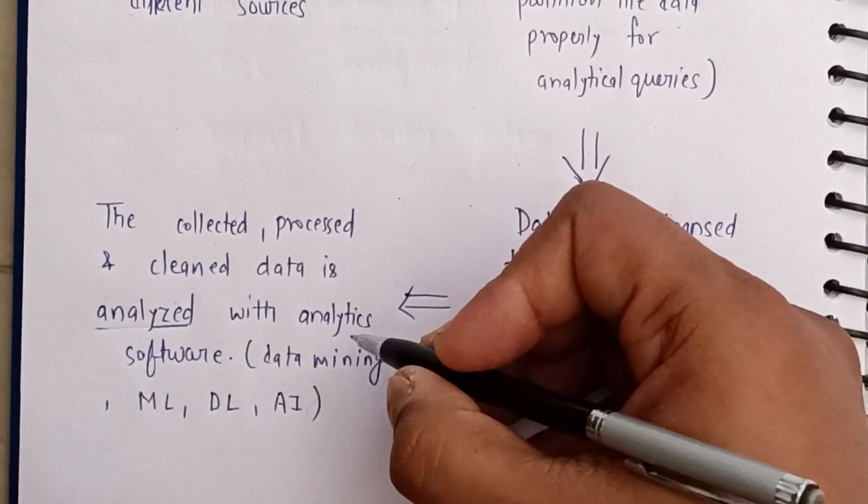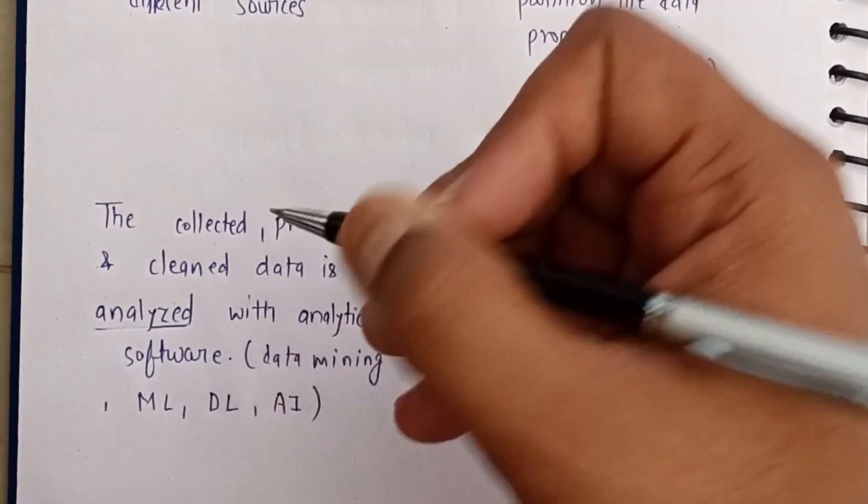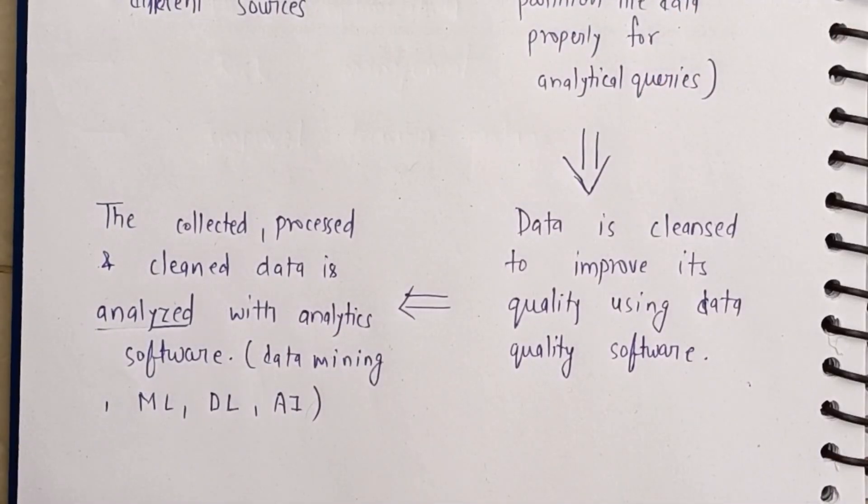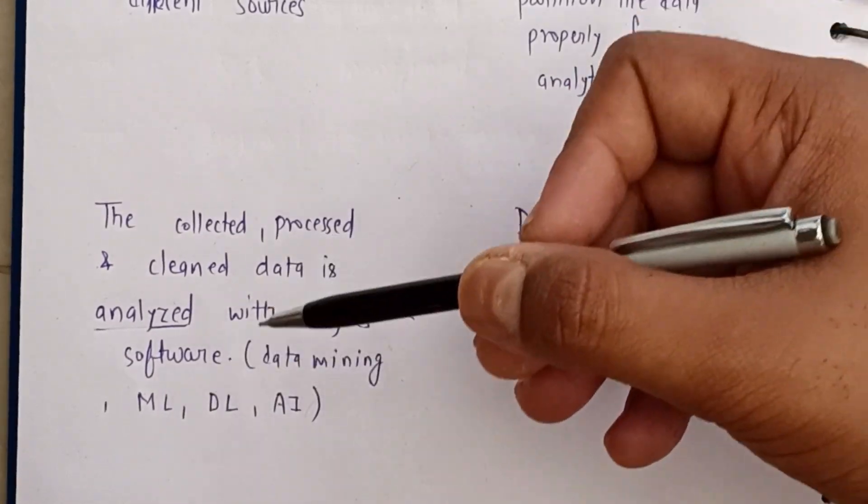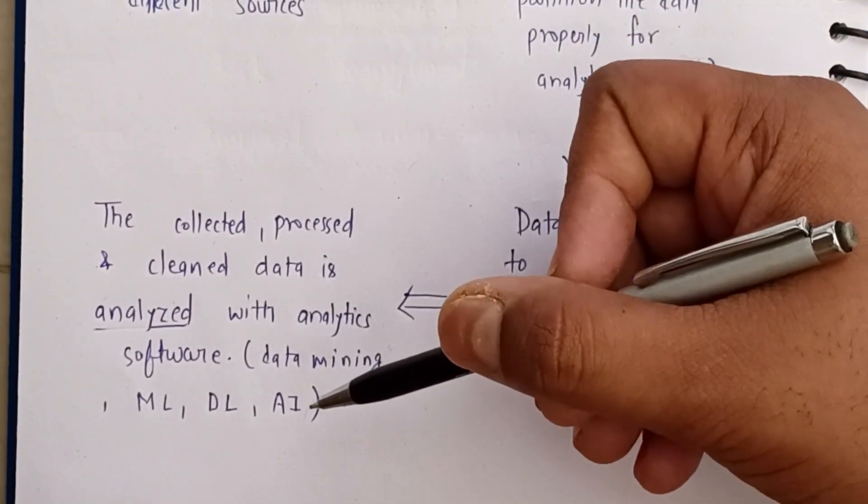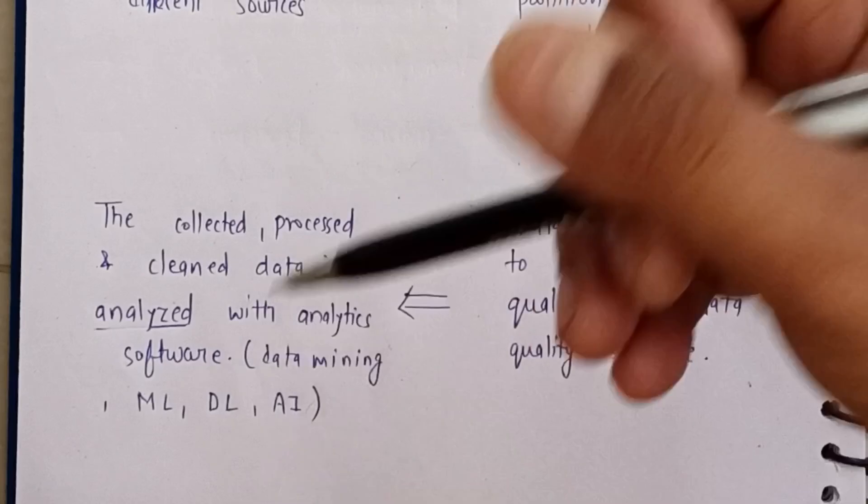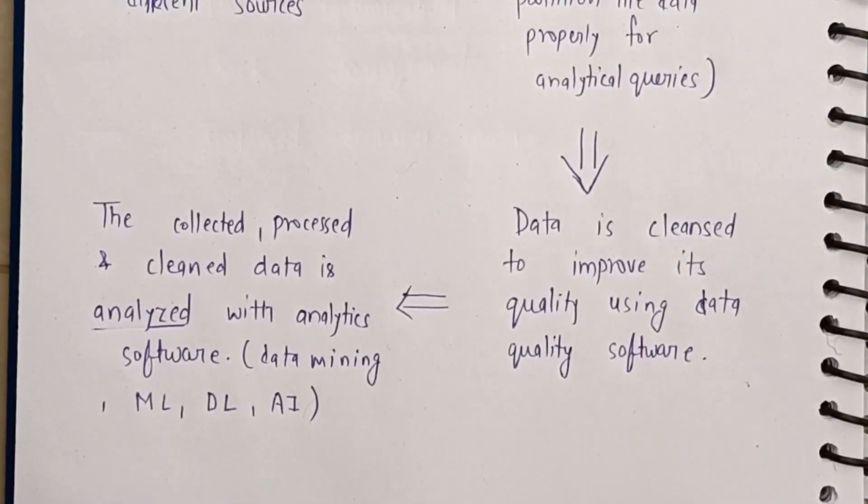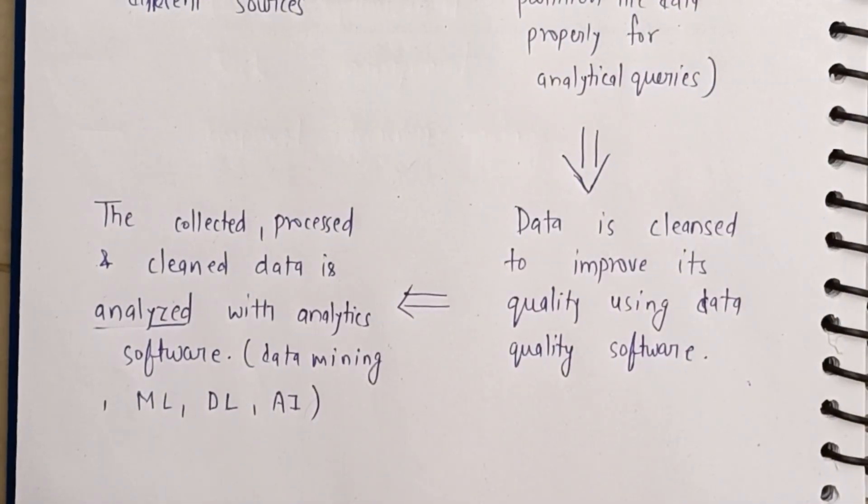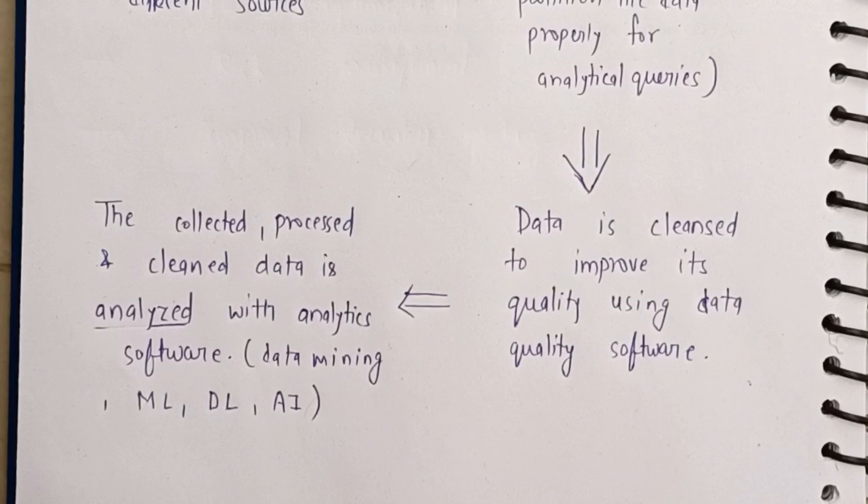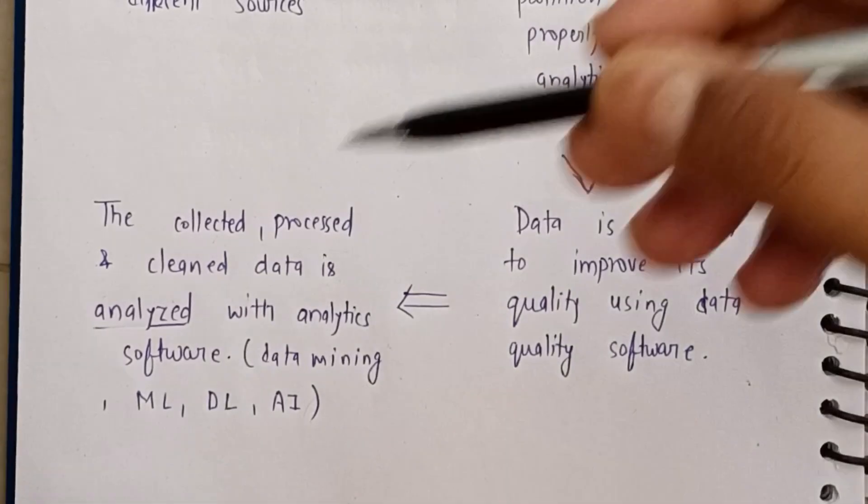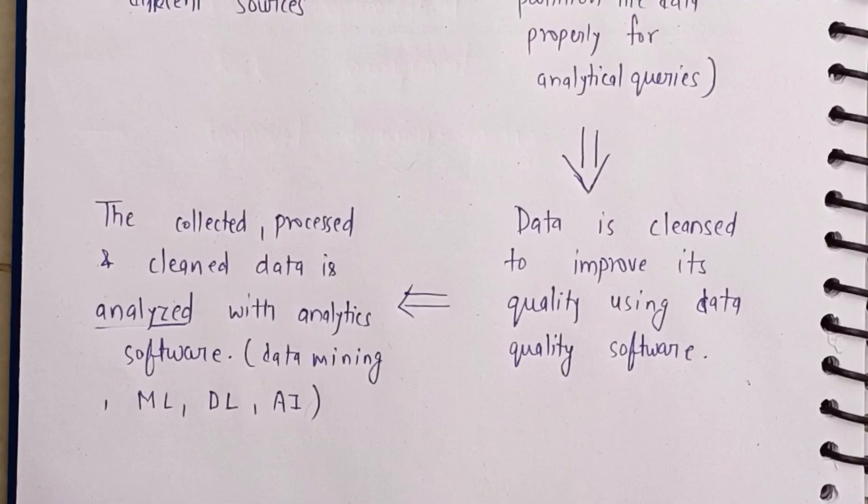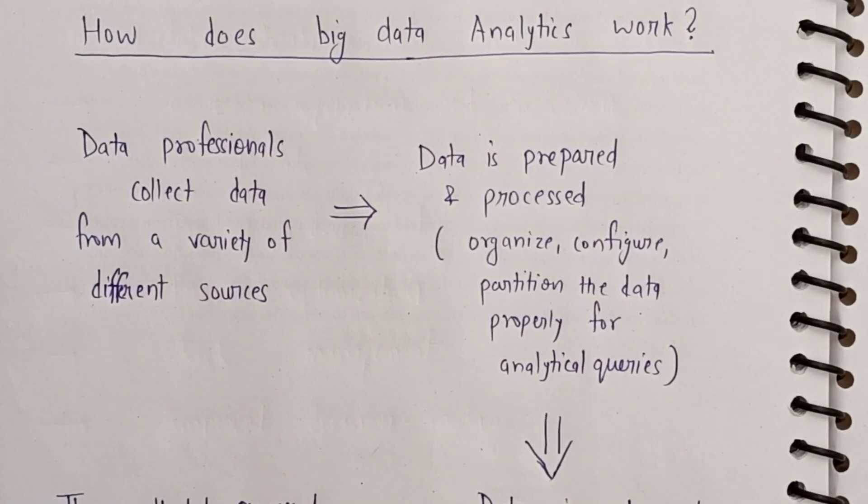Lastly, whatever data you have collected, processed, or cleaned is analyzed using analytic tools or software like data mining, machine learning, deep learning, artificial intelligence. In machine learning we create predictive models - if any customer is repeatedly buying any product, we can predict their behavior. So this is how big data analytics works.